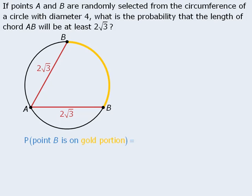So our question now boils down to this: What portion of the entire circumference is gold? If we know what portion of the entire circumference is gold, then we can determine the likelihood that a randomly selected point will be on the gold portion.